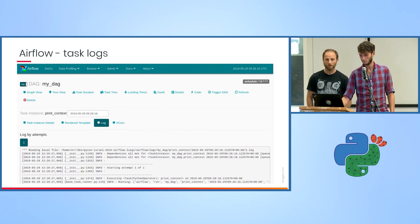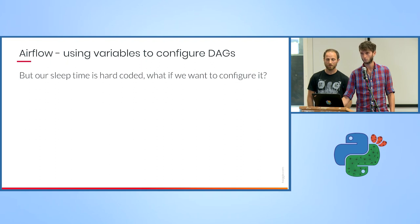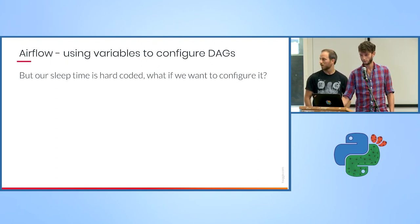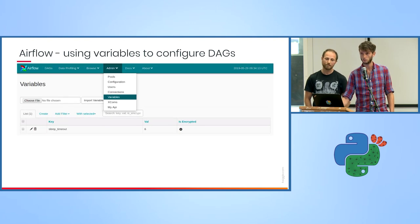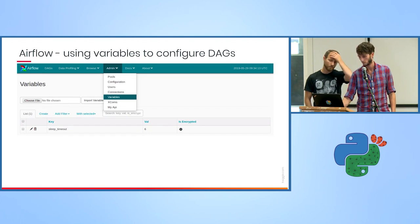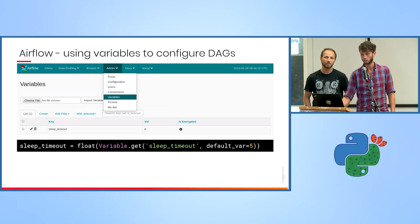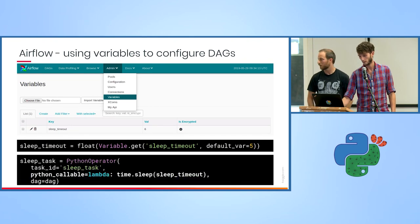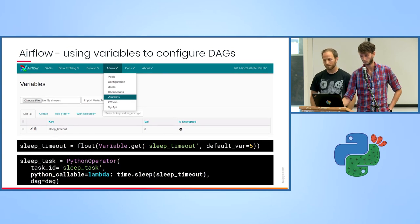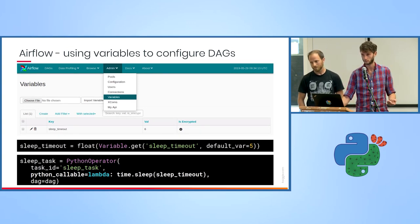But what happens if we don't want to use a hard-coded sleep timeout and we want to configure it? Airflow has a key-value store it calls variables. So we'll create a sleep timeout variable in that key-value store. Then all we'll need to do is use Airflow's variable API to read it, and instead of hard-coding the sleep timeout, we'll set the variable inside and just replace our task.